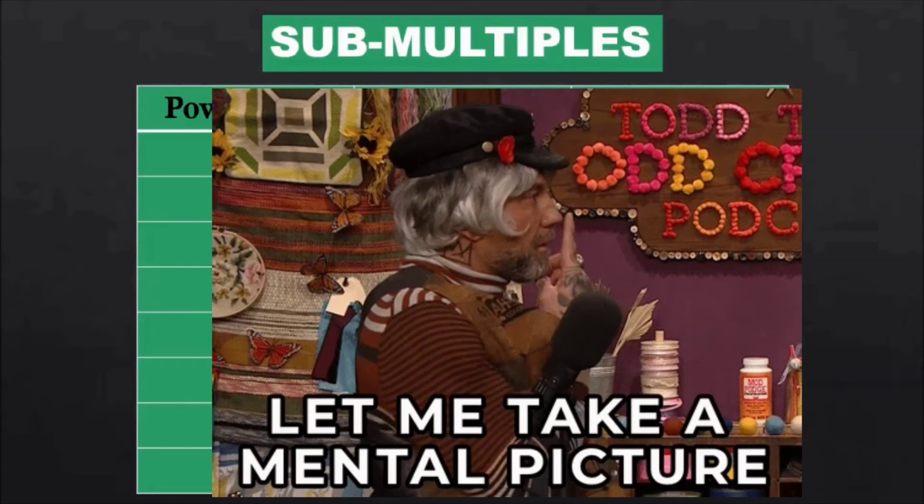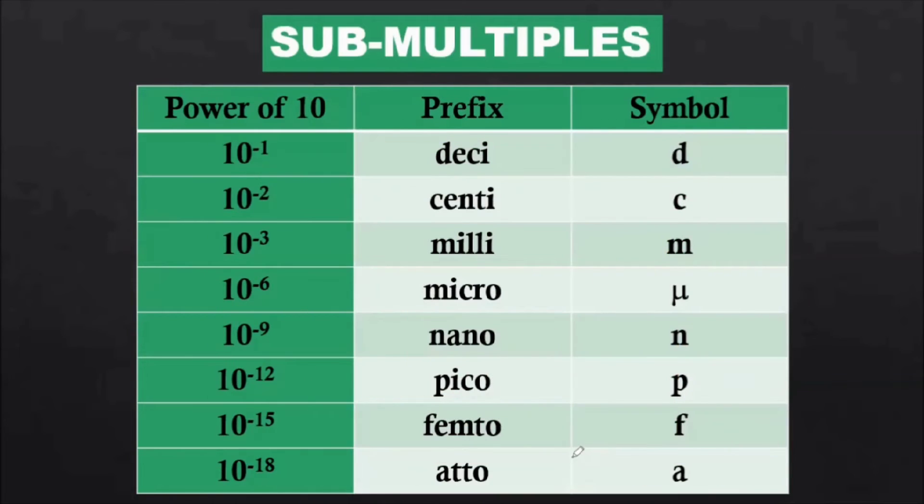You have to memorize these powers of 10 along with prefix and symbols, as they are remembered. These all are specified by CGPM, and hence everyone has to follow it as convention.